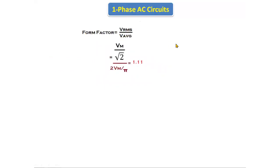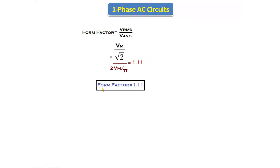The RMS value of the full wave rectifier is V_rms = Vm/√2. Next, the form factor = V_rms / V_average = (Vm/√2) / (2Vm/π). The Vm cancels, giving π/(2√2), which equals 1.11. So the form factor of the full wave rectifier is 1.11.